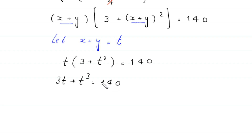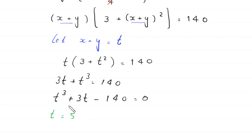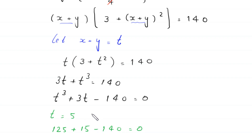Moving 140 to the left and rearranging, we get t cubed plus 3t minus 140 equals 0. Now checking t equals 5 in this cubic: 5 cubed is 125, plus 3 times 5 is 15, minus 140 equals 0. Since 125 plus 15 equals 140, t equals 5 is a solution, and therefore t minus 5 is a factor of this equation.